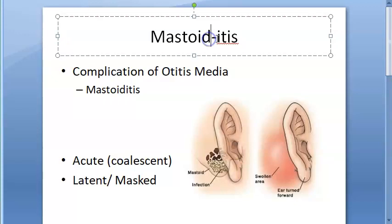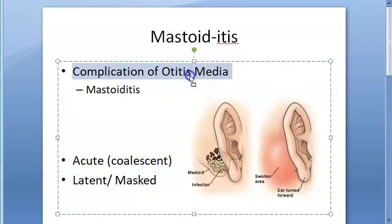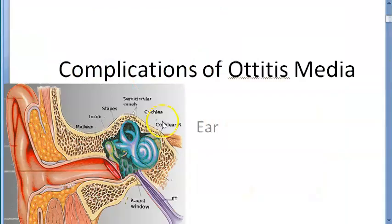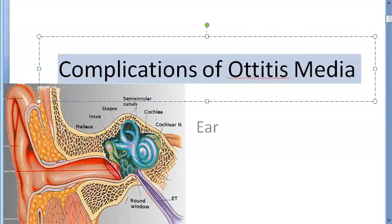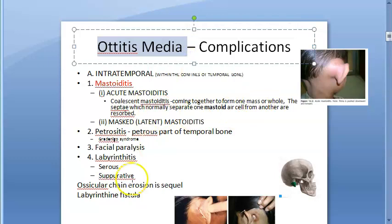In this video we want to look at mastoiditis. Basically it is the inflammation of the mucosal lining of the antrum and the mastoid air cells. Inflammation of all this will be mastoiditis. It happens because it is a complication of the middle ear infection, otitis media. It is an intratemporal complication of otitis media, which we have already seen in the video on complications of otitis media.